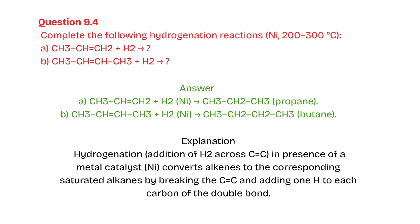Question 9.4: Complete the following hydrogenation reactions. Ni catalyst, 200–300°C. A: CH3–CH=CH2 + H2. B: CH3–CH=CH–CH3 + H2.